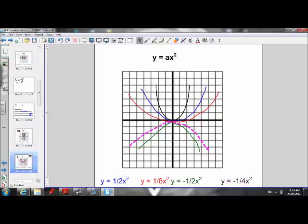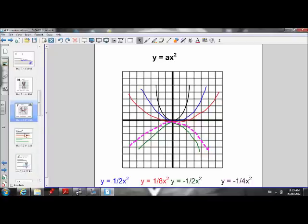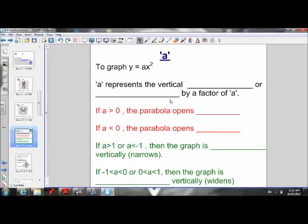Okay, now let's fill out what we've discovered about the a value, about varying the a value of a quadratic function in vertex form. So a represents, let's get these technical terms right, a represents the vertical stretch or compression by a factor of a. Make sure you have this written just like this when you're describing a transformation form.